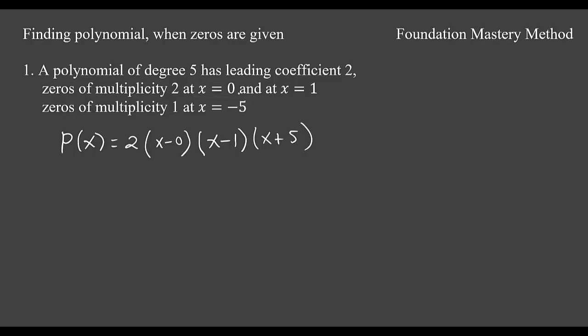Now look at the multiplicity: at 0 you have 2, at 1 you have 2. So put a square here and here, and this one has 1 so you can put 1.